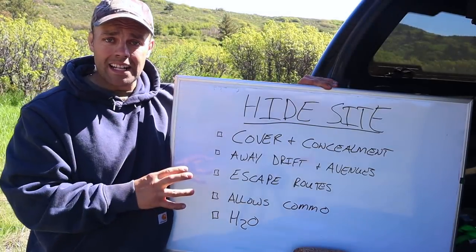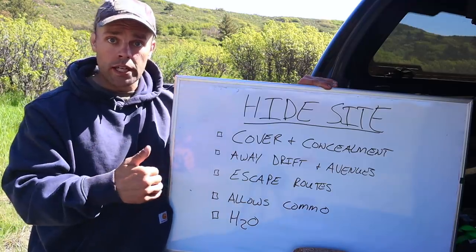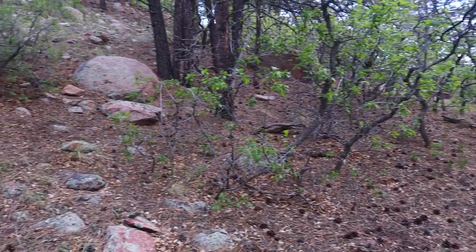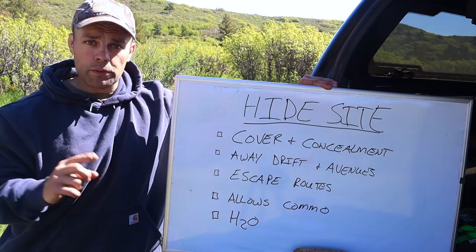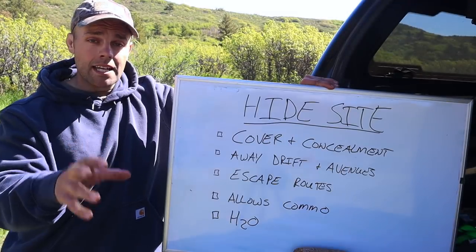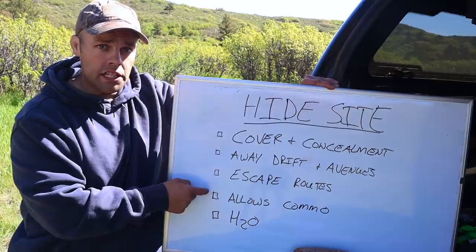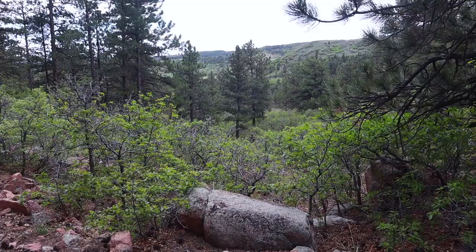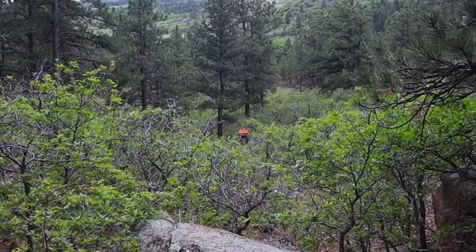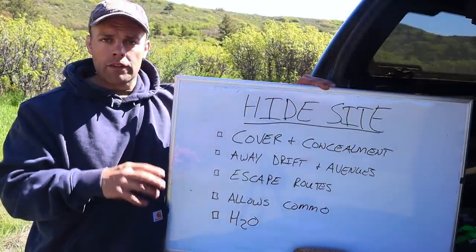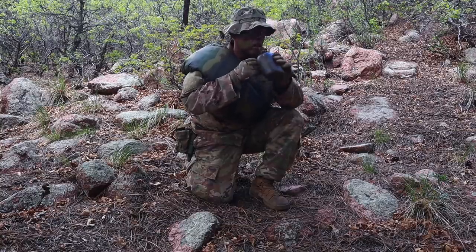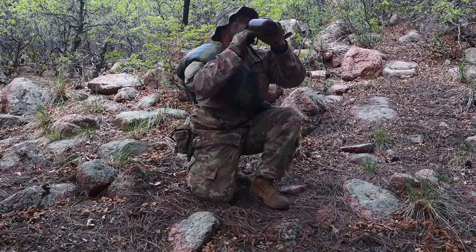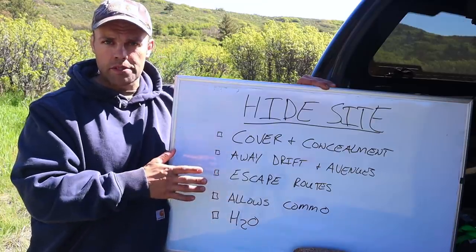We want a hide sight that offers multiple escape routes, so we're not cornered into a thicket or a rock face. If enemy forces should discover us, we can beat feet out of that hide sight through multiple directions to avoid capture. We also want a hide sight that allows for communications — we want to be able to communicate with recovery assets, with our handlers, with friendly forces. We want a good spot where communication is effective. For H2O and resources, we want a hide sight close to water where we can fill up either on the way to the hide sight or if we need to leave to go fill up on water.